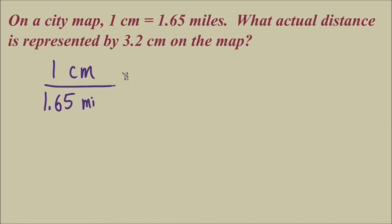The first ratio I set up is using this information that one centimeter equals 1.65 miles on the map. Be cautious here, even though we see that these two quantities are equal to each other, they actually belong in the numerator and denominator of one fraction, not on opposite sides of the equal sign when we write the proportion. So one centimeter equals 1.65 miles becomes one ratio in this proportion.